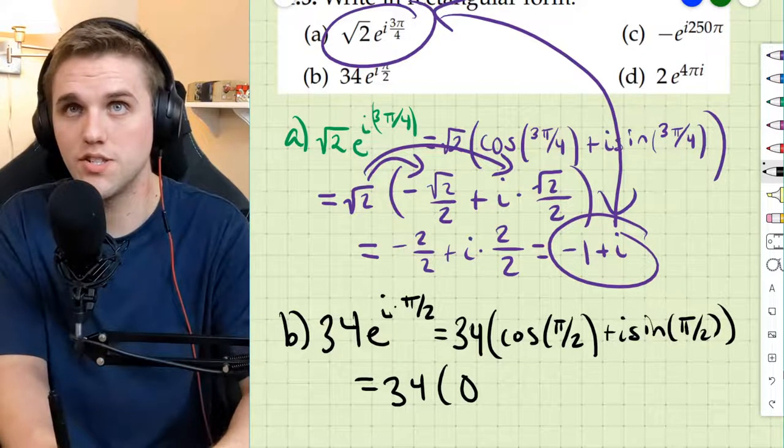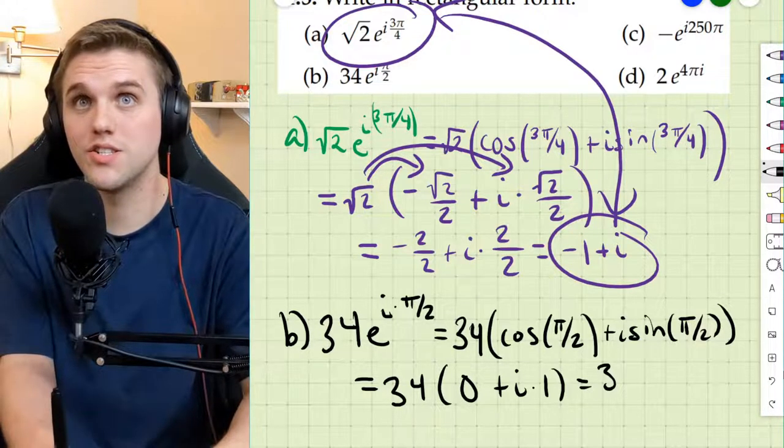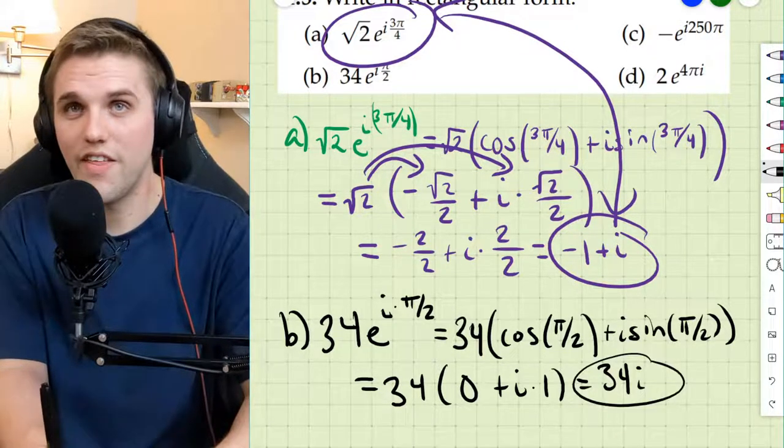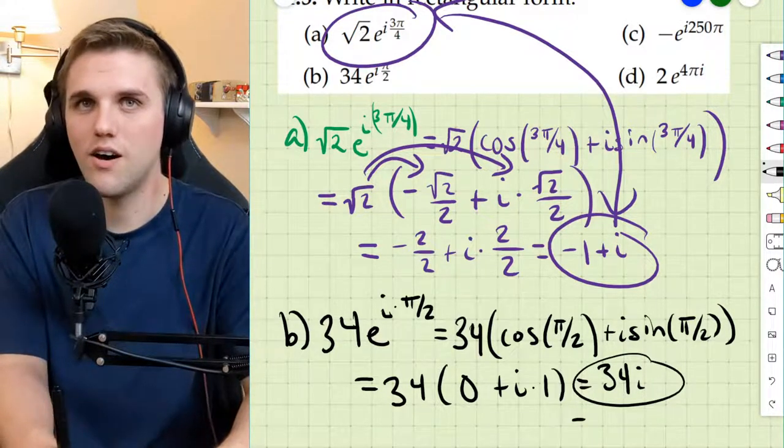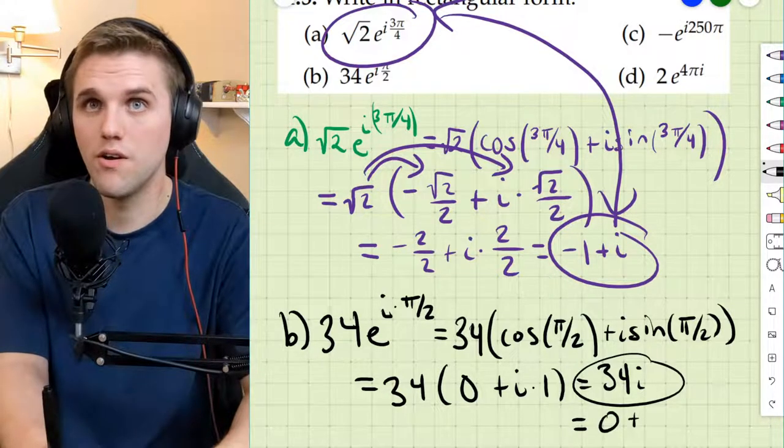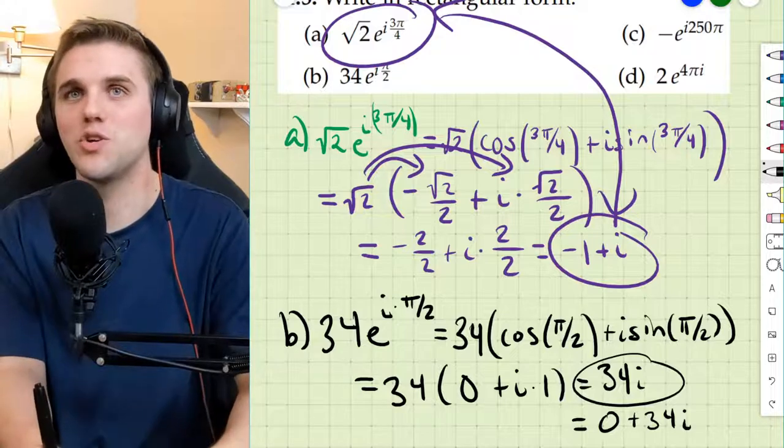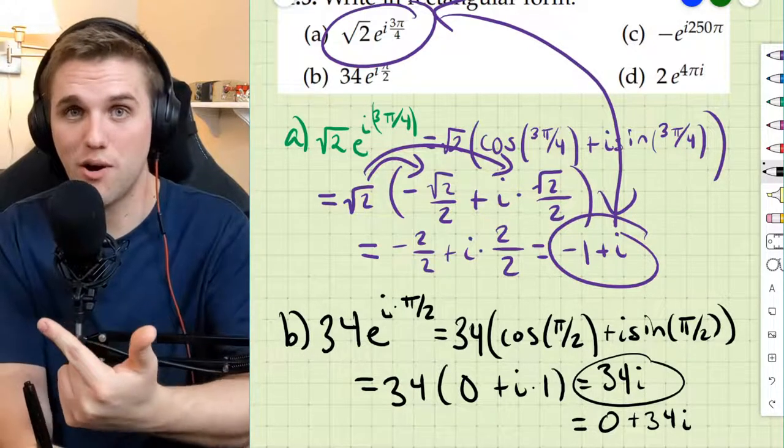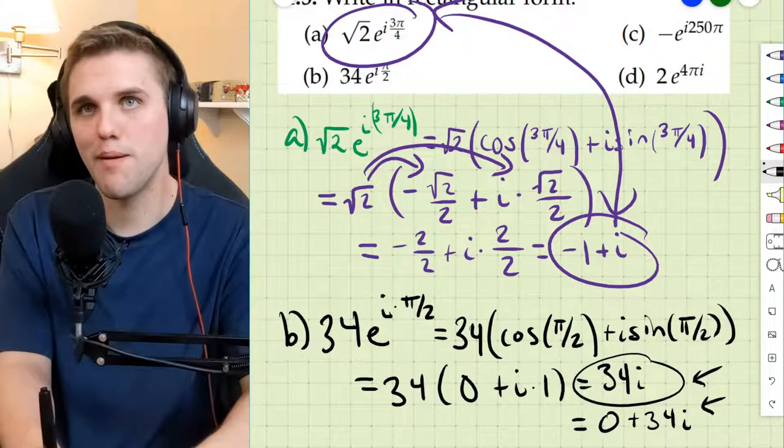This is 34 times 0 plus i times 1, which is 34i. Now, that's rectangular form. That would be acceptable rectangular form, I think. Although, to be specific, this is 0 plus 34i. That way, it's a little bit more clear as to what the real and imaginary part to this complex number is. That's the whole point of the rectangular form.